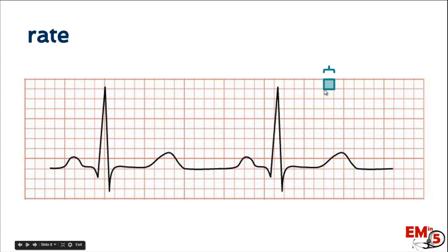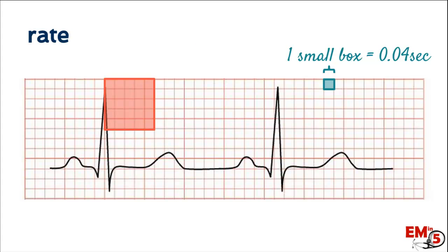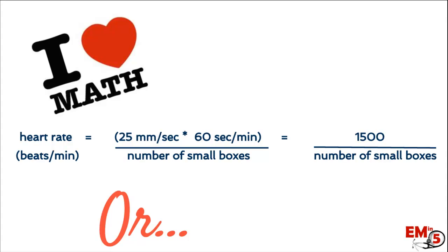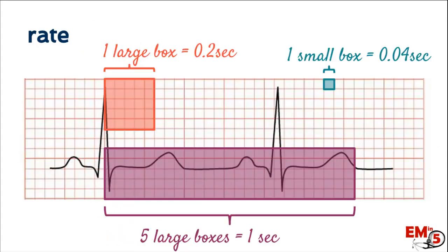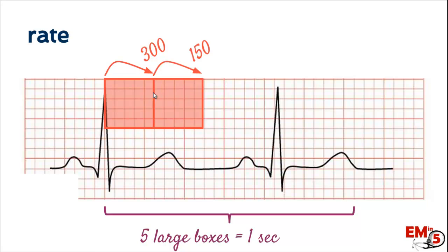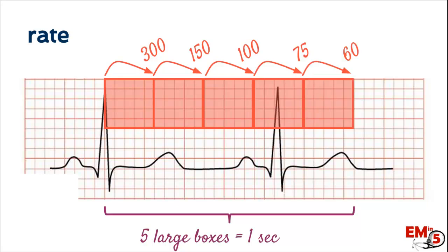Let's start off with rate. Each small box is 0.04 seconds, which means a big box — five by five of the small boxes — is 0.2 seconds, meaning it takes five large boxes to equal one second. You can count the number of small boxes between each QRS complex to get beats per minute, or use this nifty method of identifying large boxes between each QRS complex: one box apart is 300, two boxes is 150, three is 100, then 75, 60, and so on.